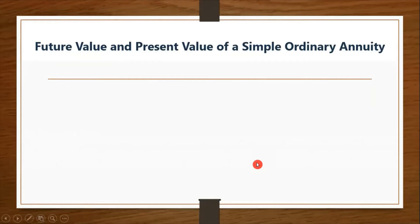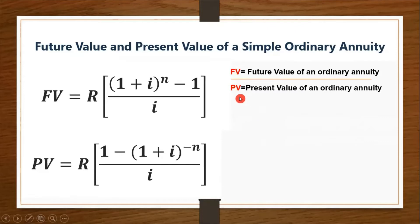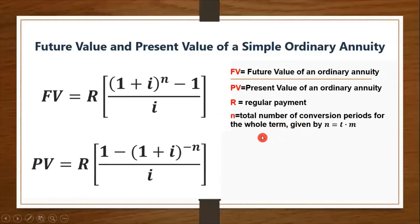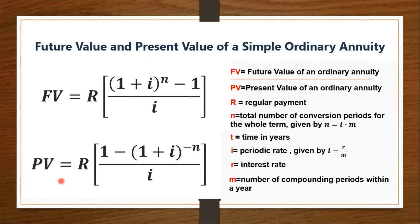These are the formulas used in finding the future value and present value of a simple ordinary annuity. FV is the future value, PV is the present value, R is the regular or periodic payment, N is the total number of conversion periods for the whole term given by N = T × M, T is the time in years, and I is the periodic rate given by I = R ÷ M, where R is the interest rate and M is the number of compounding periods within a year. The future value is the total of payments and interest earned at the end of the term, while the present value is the principal that must be invested today to provide the regular payments for the annuity.